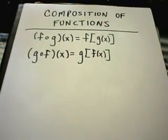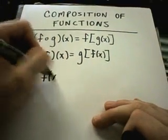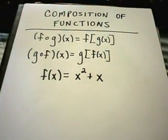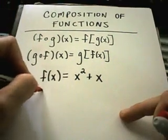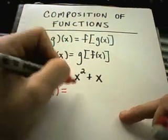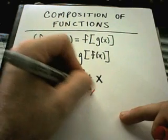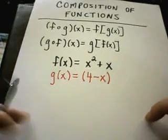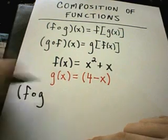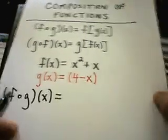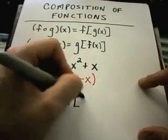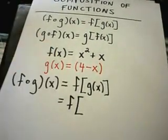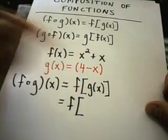I think composition confuses people a little bit, so let's take a couple examples. Let f of x equal x squared plus x, and let g of x equal 4 minus x. Suppose we want to figure out f of g of x. What that means is we want f of g of x.